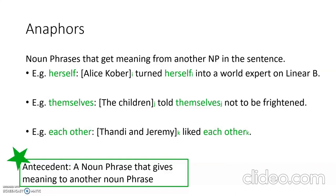In the second example, 'the children told themselves not to be frightened' — themselves refers to the children, they're co-indexed, meaning they have the same referent. The children is acting as the antecedent, and themselves is the anaphor. In the final example, 'Tandi and Jeremy liked each other' — Tandi and Jeremy is the antecedent, each other refers back to Tandi and Jeremy, and so it is the anaphor.